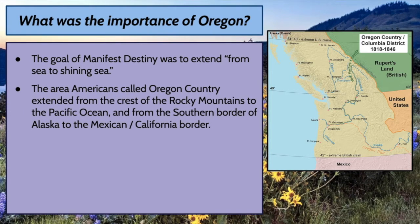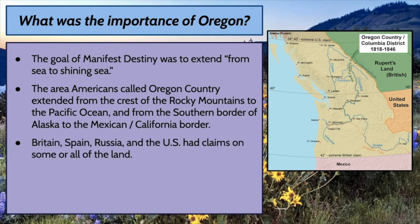The area Americans called Oregon Country extended from the crest of the Rocky Mountains to the Pacific Ocean, and from the southern border of what we now know as Alaska to the Mexican border — which is now the northern border of California. Britain, Spain, Russia, and the United States all had some form of claim on some or all of this land. Russia was up in Alaska, Spain was in Mexico, because Mexico was once New Spain, and Britain controlled the areas north of the United States.